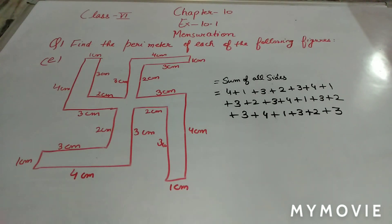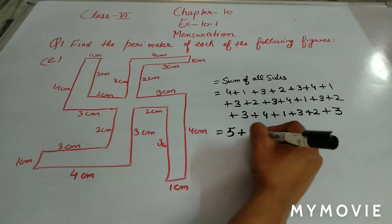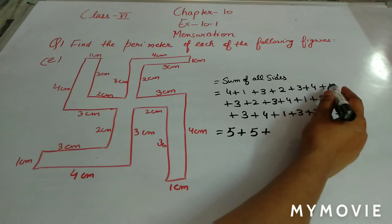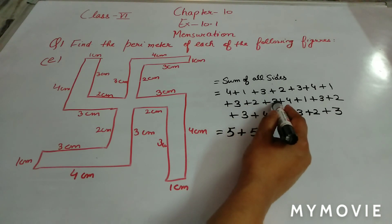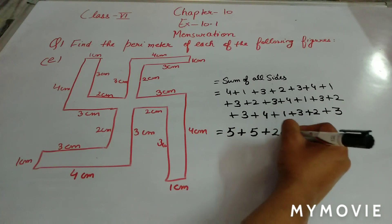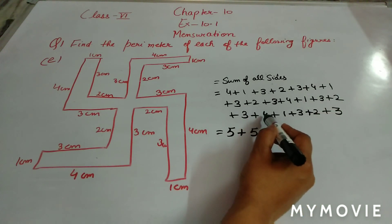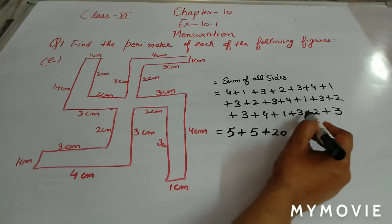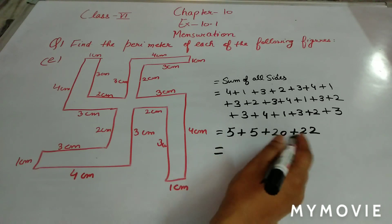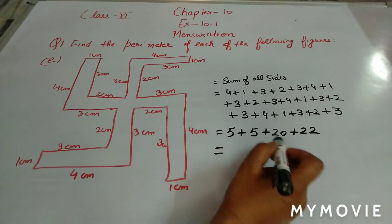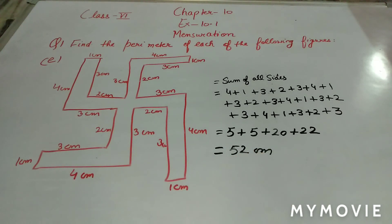To make calculation easy: 4 plus 1 is 5, plus 3 is 8, plus 2 is 10, gives us 10. Then 3 plus 4 is 7, plus 1 is 8, plus 3 is 11, plus 2 is 13, plus 3 is 16, plus 4 is 20. Then 1 plus 3 is 4, plus 2 is 6, plus 3 is 9, plus 4 is 13, plus 1 is 14, plus 3 is 17, plus 2 is 19, plus 3 is 22. Finally 10 plus 20 plus 22 = 52 centimetres.